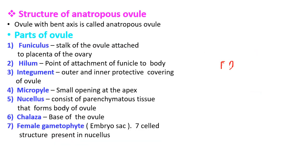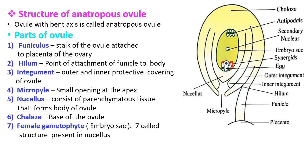Ovules are present inside the ovary. Generally, most angiosperms show presence of an anatropous ovule. We will now see the structure of the anatropous ovule. An anatropous ovule is one in which the axis is bent — it is also called an inverted ovule. In the given diagram, we can see the vertical section of an anatropous ovule in angiosperm. The stalk of the ovule is called the funicle. By the help of this funicle, the ovule is attached to the placenta of the ovary.